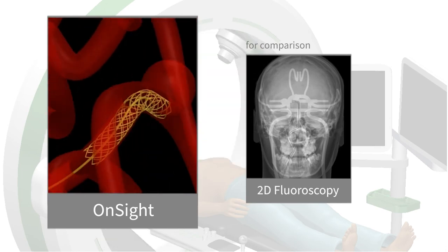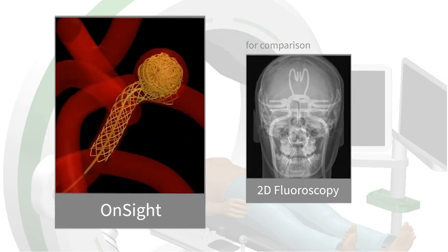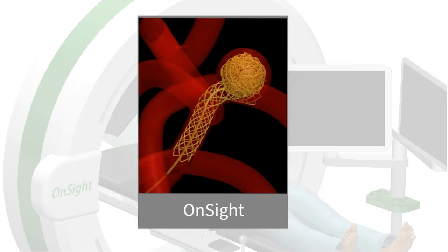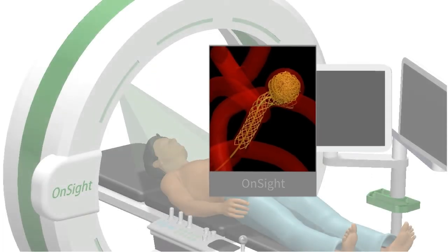Imagine, the relative position of the coils with respect to the aneurysm and the supporting stent would always be unambiguous in 3D.